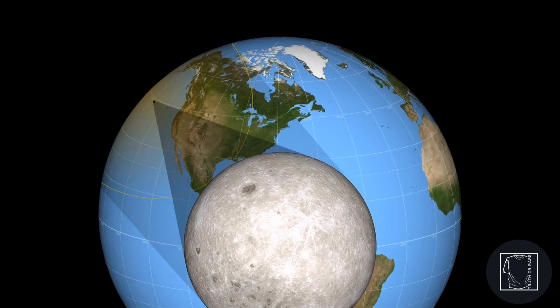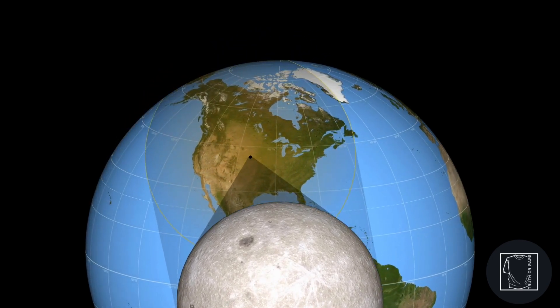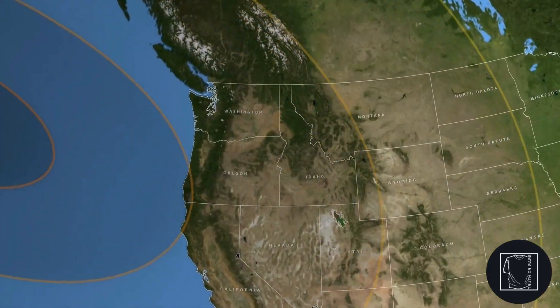A solar eclipse is a rare event that not many get to see because the moon's shadow is relatively small. This limits the locations on Earth that get to see it. You have to be on the sunny side of the planet and you have to be in the path of the moon's shadow.